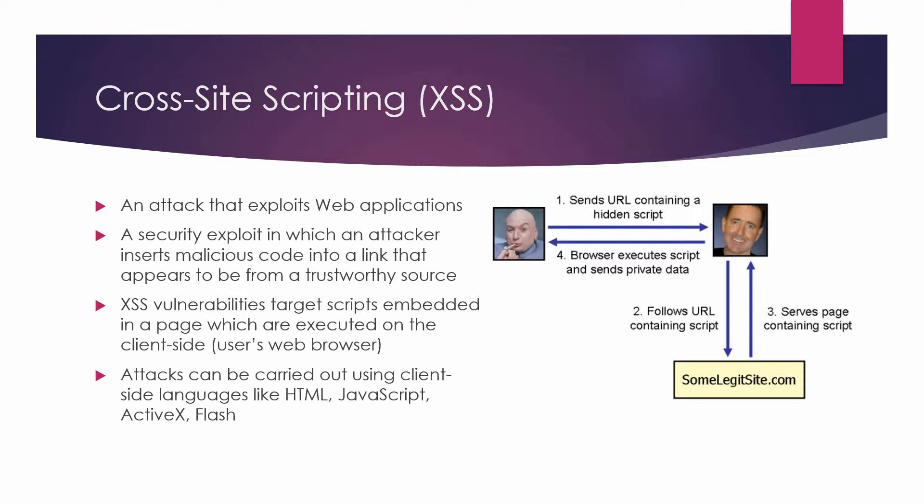The two types are persistent, also known as stored, and non-persistent, also known as reflected. In a persistent cross-site scripting attack, which is the most serious type, data that can modify how an application or service operates is downloaded and stored onto the targeted server. The victim is the one who triggers the attack.